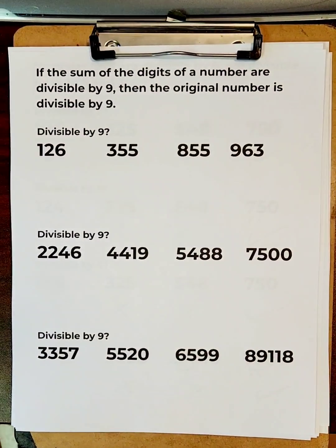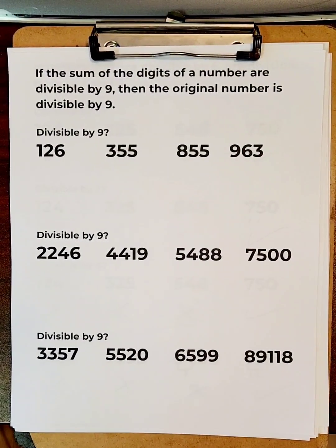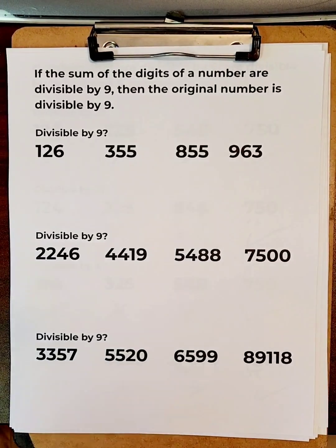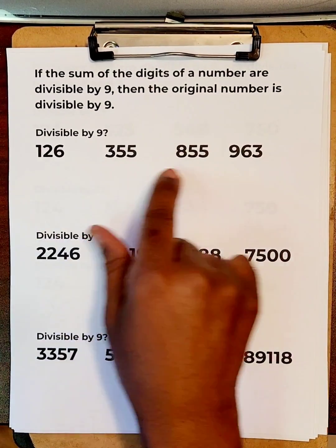If the sum of the digits of a number are divisible by 9, then the original number is divisible by 9. So, let's see if these original numbers are divisible by 9.